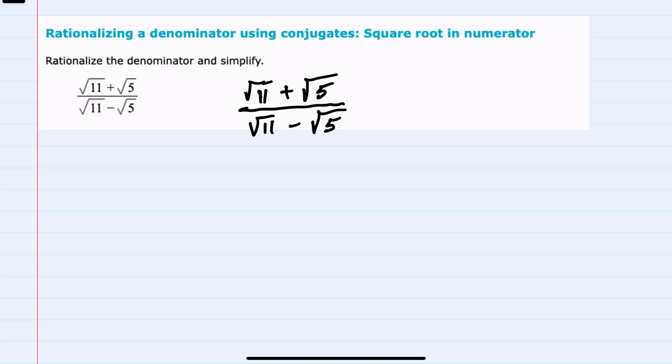And for this example, to rationalize the denominator, we'll need to remove both of these square roots in the denominator. And to do so, we'll use conjugates, where conjugates such as a minus b and a plus b give us the first term squared minus the second term squared.